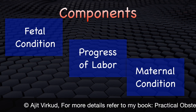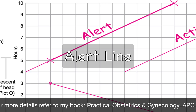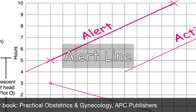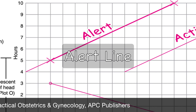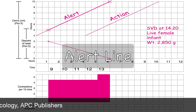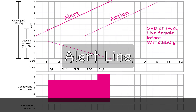Any drugs given or IV fluids are recorded here, and the oxytocin drip rate is also recorded. The alert line begins at 4 cm dilatation and extends to the point of expected full dilatation at 10 cm. It represents a rate of dilatation of 1 cm per hour. The first dilatation reading is always plotted on the alert line. When labour progress is normal, plotting of dilatation remains on the alert line or to its left.